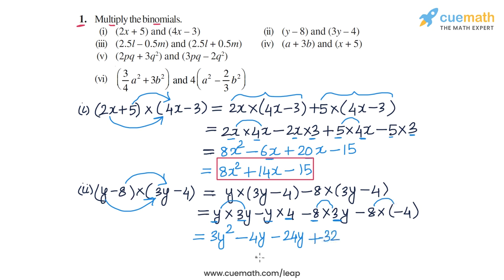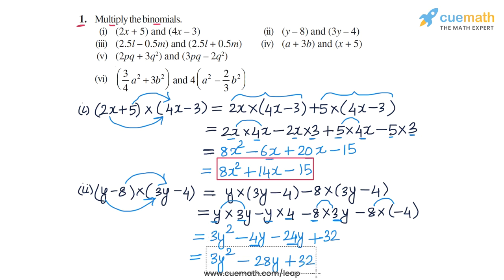We have four terms, of which minus 4y and minus 24y are like terms and can be combined. We get 3y squared, then minus 28y — because minus 4 and minus 24 combined gives minus 28 — and then plus 32. So 3y squared minus 28y plus 32 is the answer for the second part.